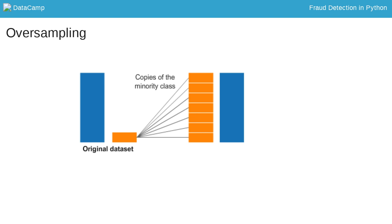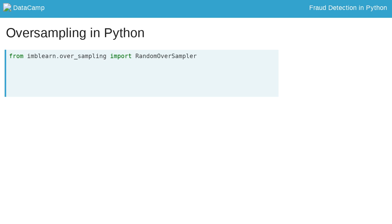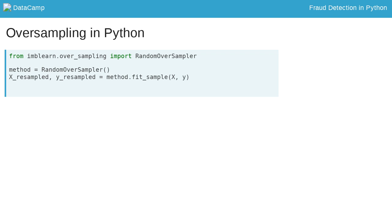Let's see how you can implement these methods in practice. You can implement resampling methods using Python's Imbalanced Learn module. It is compatible with scikit-learn and allows you to implement these methods in just two lines of code. I import the package and take the random oversampler and assign it to method. I simply fit the method onto my original feature set X and labels Y to obtain a resampled feature set X and resampled Y.